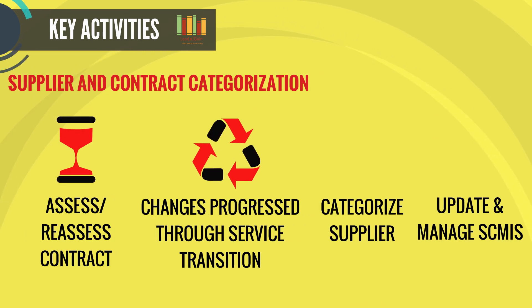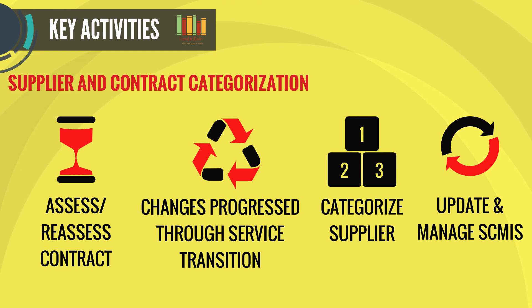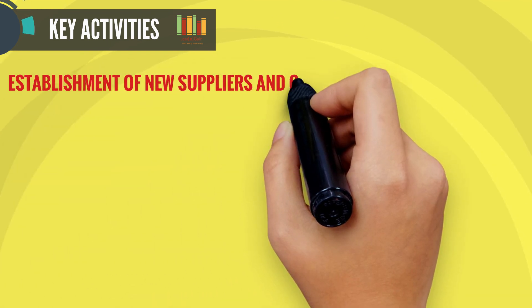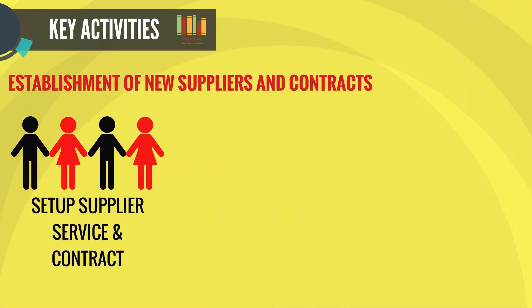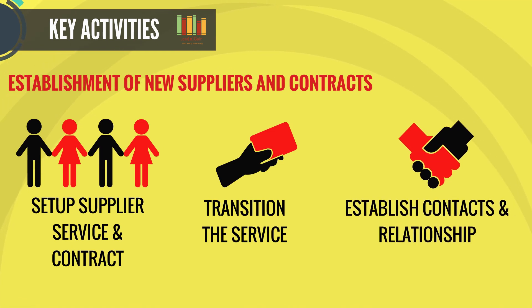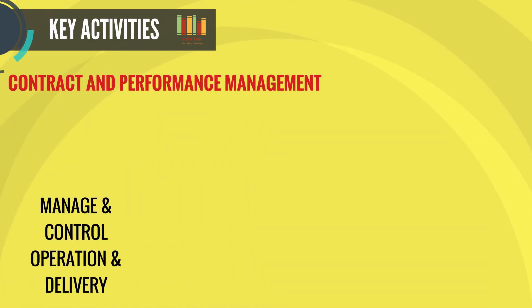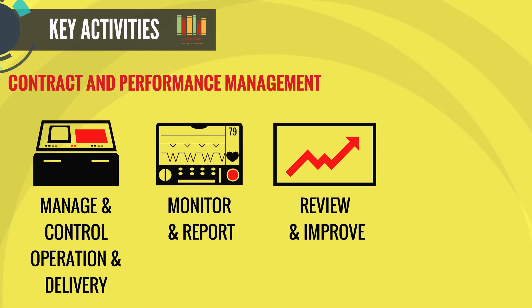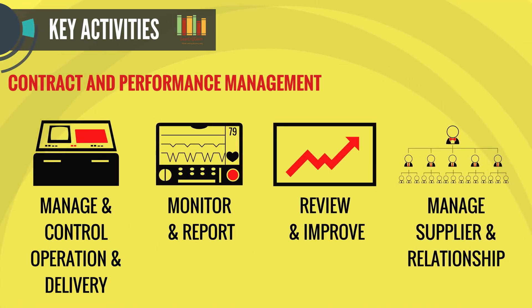Supplier evaluation and categorization includes assessing the supplier, ensuring changes are processed through service transition, categorizing the supplier, and updating and managing SCMIS. Establishment of new suppliers and contracts includes setting up the supplier contract, transitioning the service, and establishing contacts and relationships. Contract and performance management includes managing and controlling operations, monitoring and reporting, reviewing and improving service quality, managing supplier relationships, and reviewing annually.